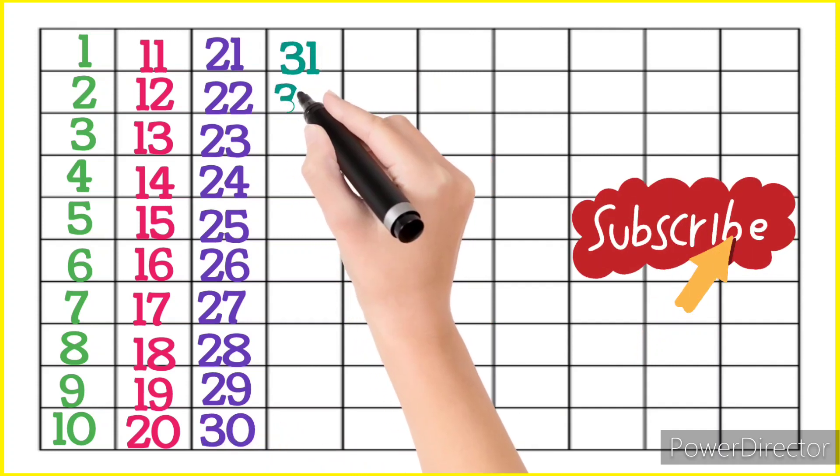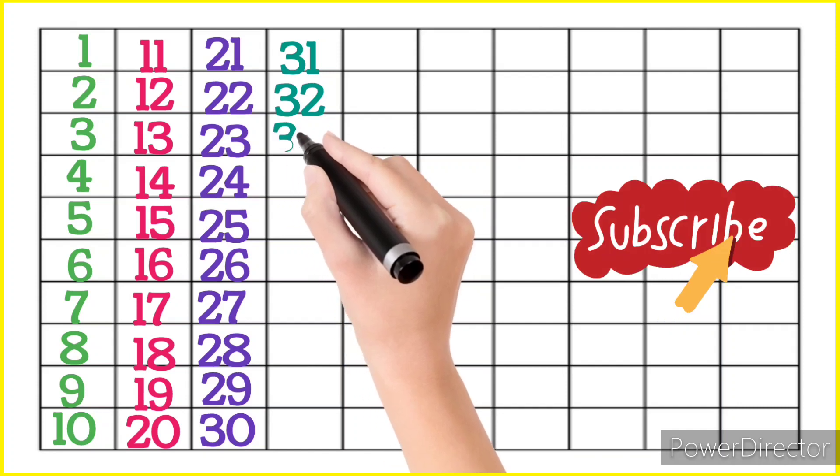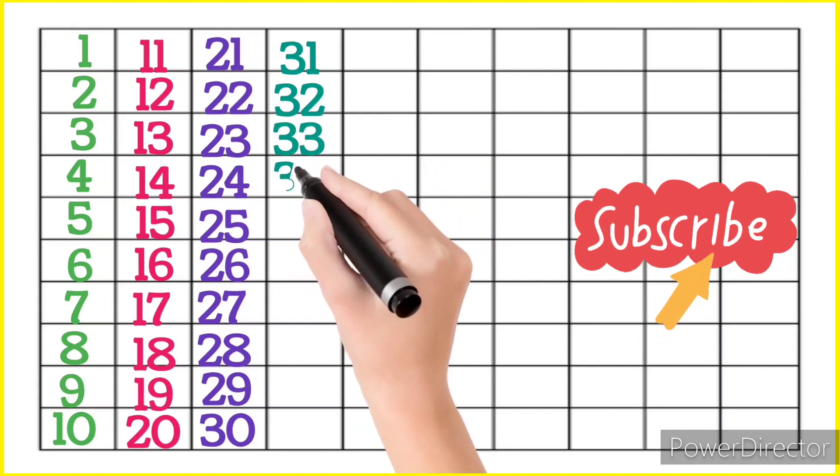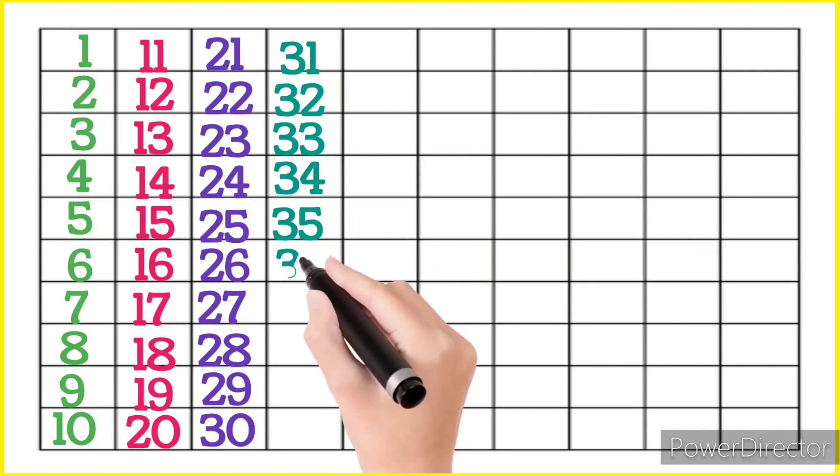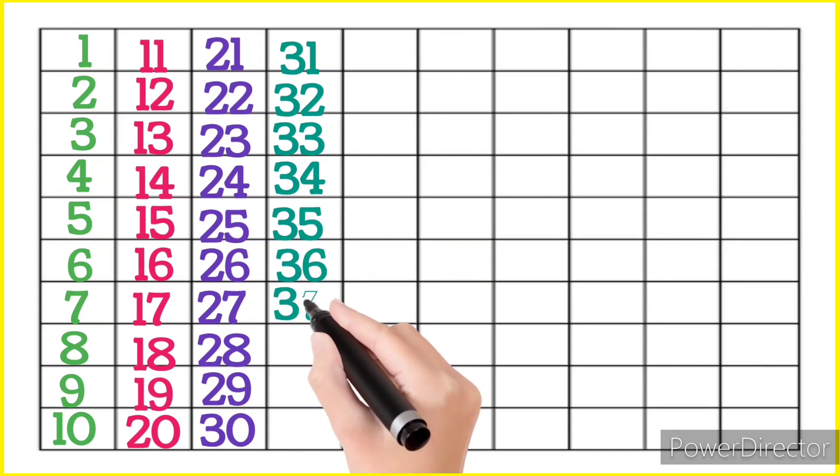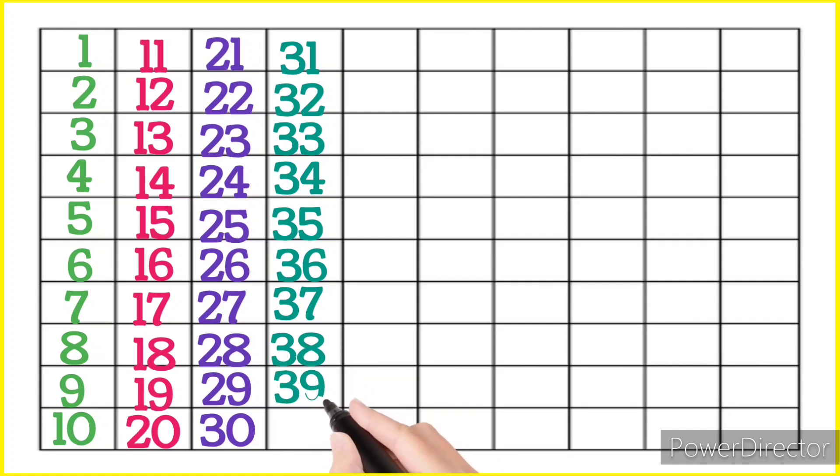3, 1, 31, 3, 2, 32, 3, 3, 33, 3, 4, 34, 3, 5, 35, 3, 6, 36, 3, 7, 37, 3, 8, 38, 3, 9, 39, 4, 0, 40